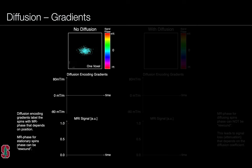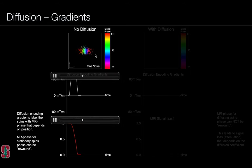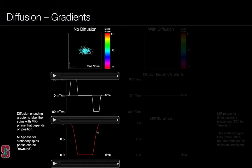Let's examine what happens with the bipolar encoding gradient applied to a population of spins distributed across x-y space within a voxel. Each individual particle diffusing within the voxel accrues its own individual phase, but it is their ensemble sum that gives rise to the signal sampled for a particular pixel. The diffusion encoding gradients label spins with MR phase that depends on position. If spins don't move, that phase is undone—the MR phase for stationary spins is rewound—and we recover back to the baseline signal level.